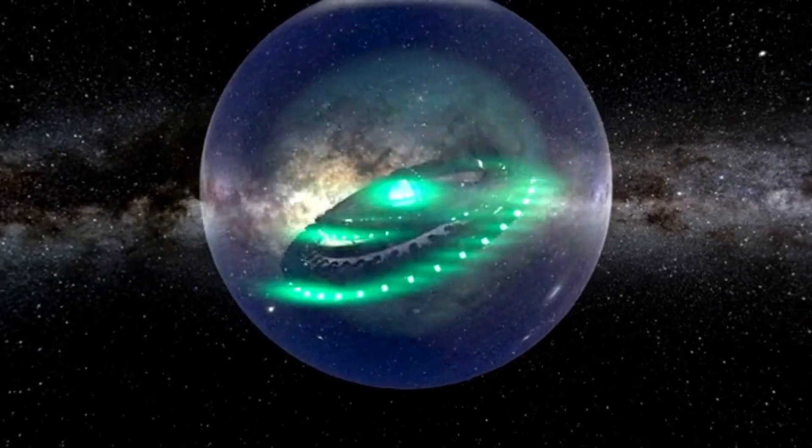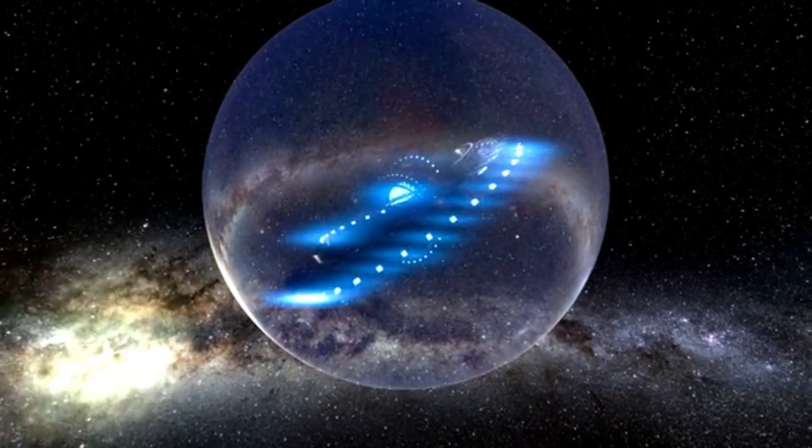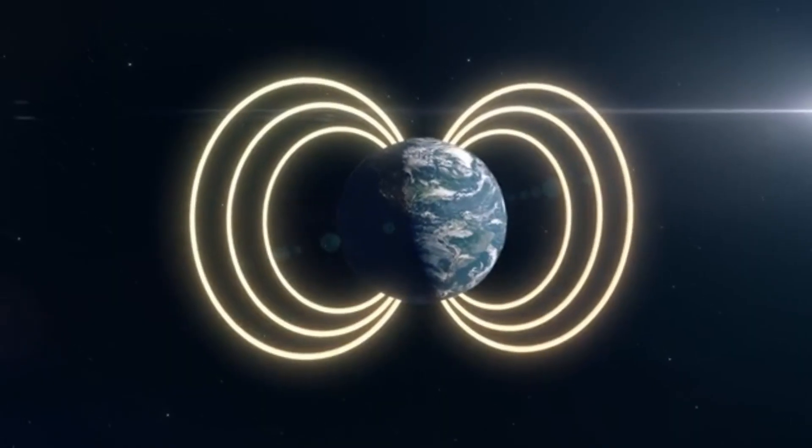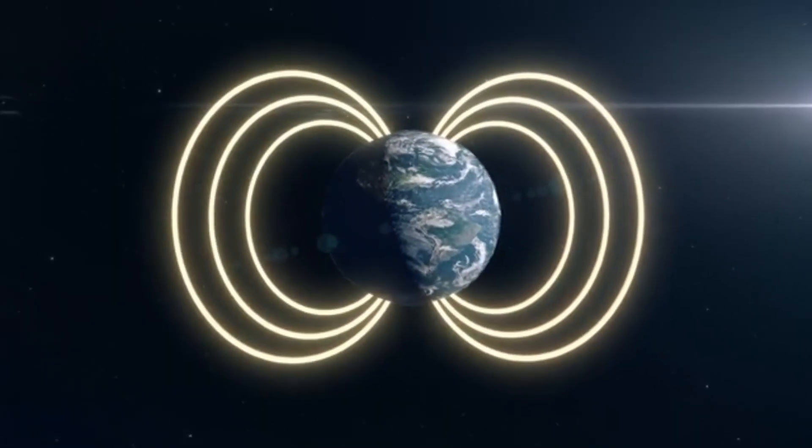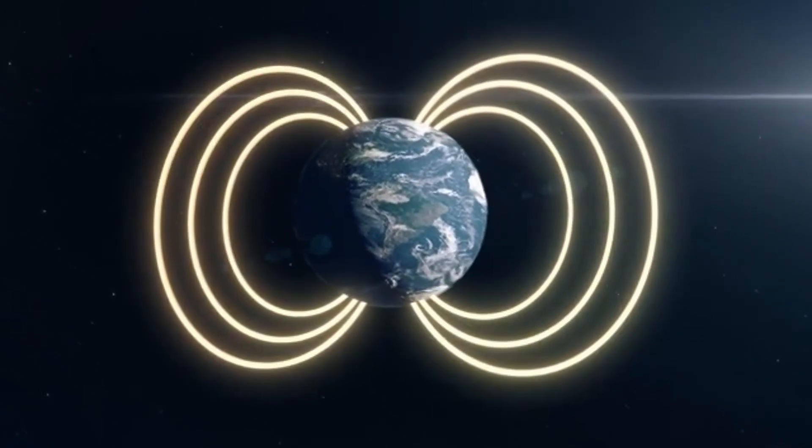Interstellar plasma is more dense than scientists once believed, creating pressure against the bubble of the heliosphere. This balance between the outward flow of the solar wind and the inward push of interstellar particles shapes the very boundary that Voyager 2 crossed.